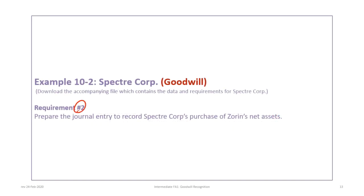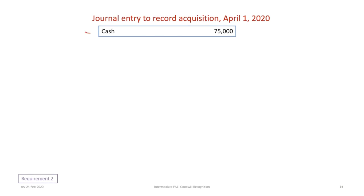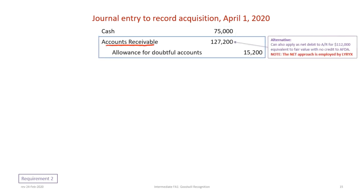We now move on to requirement two: preparing the journal entry to record SpectreCorp's purchase of Zorin's net assets. We begin by debiting cash for $75,000, the amount of cash on Zorin's books. For accounts receivable, there are two approaches: record the gross balance of $127,200 with an allowance for doubtful accounts of $15,200, or use the net method and apply $112,000 directly to accounts receivable, leaving out the allowance.